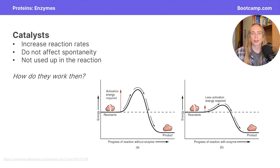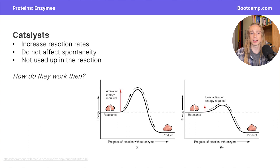Many of you are familiar with the term catalyst, and you might remember that a catalyst is just something that speeds up the rate of a reaction. While catalysts can speed up the rate of the reaction, it's important to note that they do not affect the spontaneity of a reaction, meaning that it doesn't make a reaction more likely to take place if it's a non-spontaneous reaction. Another key point is that a catalyst is not used up in a reaction.